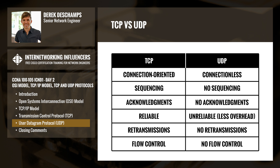In summary, the key differences between TCP and UDP are as follows. TCP is a connection-oriented protocol while UDP is connectionless. TCP uses sequencing while UDP does not have any form of sequence numbers. TCP uses acknowledgements while UDP does not. TCP is considered to be reliable while UDP is considered to be unreliable but with less overhead. TCP also has a means of retransmitting data while UDP does not. And finally, TCP uses windowing for flow control while UDP does not have any flow control mechanism.